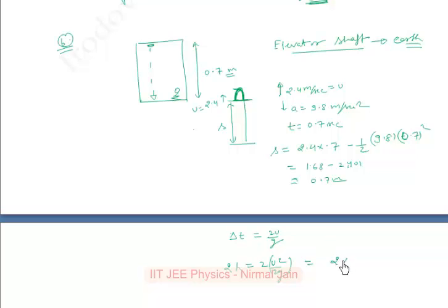So 2 times 2.4 squared by 2 times 9.8. So solving this, what I get is the extra distance 2h where h is this.